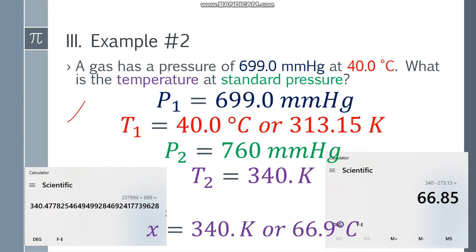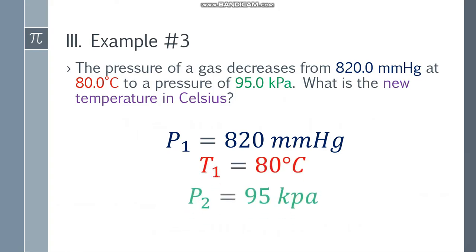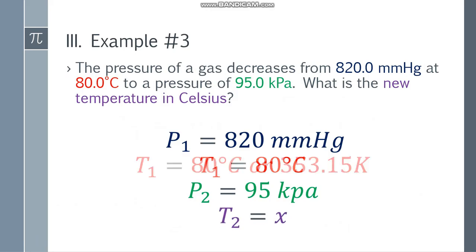Let's go to example number 3. The pressure of a gas decreases from 820.0 mmHg at 80.0 degrees Celsius to a pressure of 95.0 kPa. What is the new temperature in Celsius? Write the given: P1 is 820 mmHg, T1 is 80 degrees Celsius, P2 is 95 kPa, T2 is x.